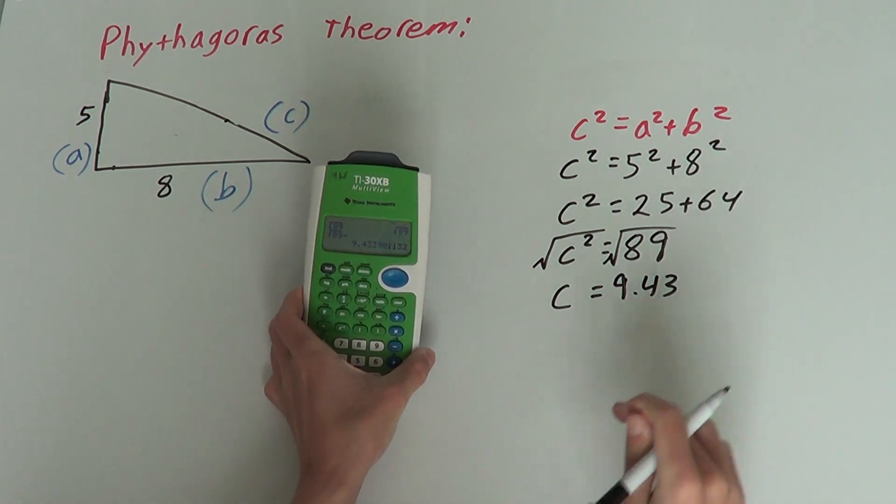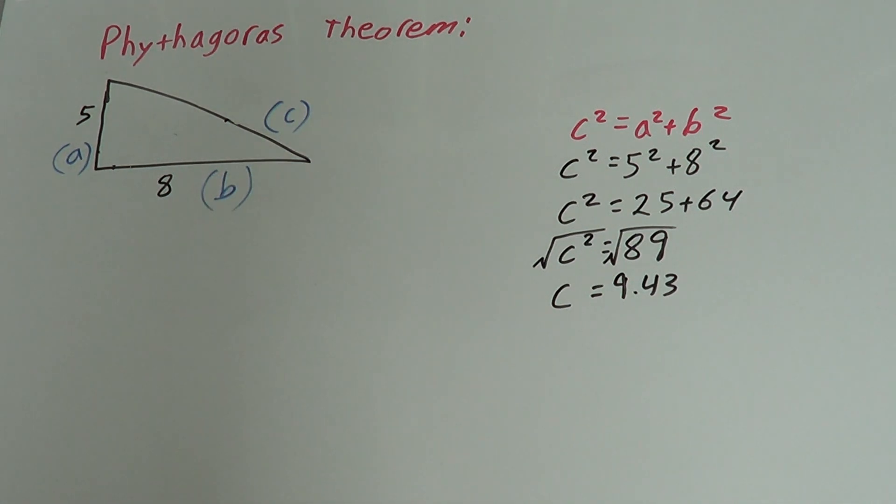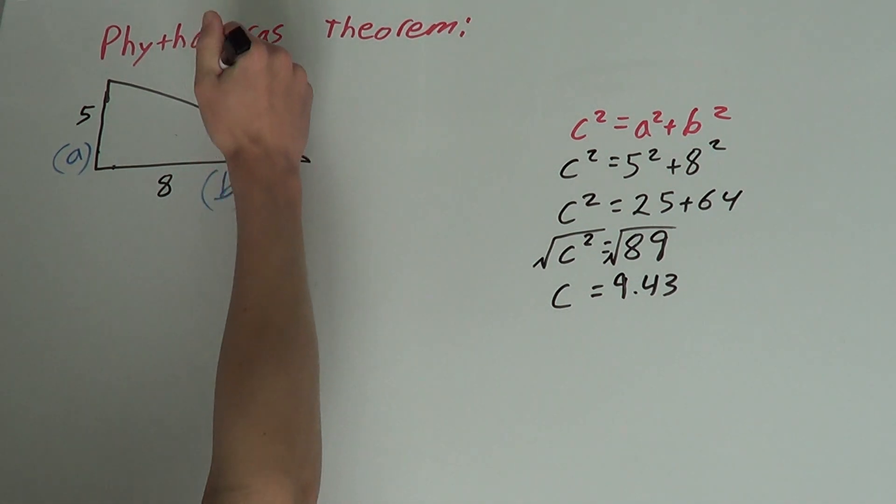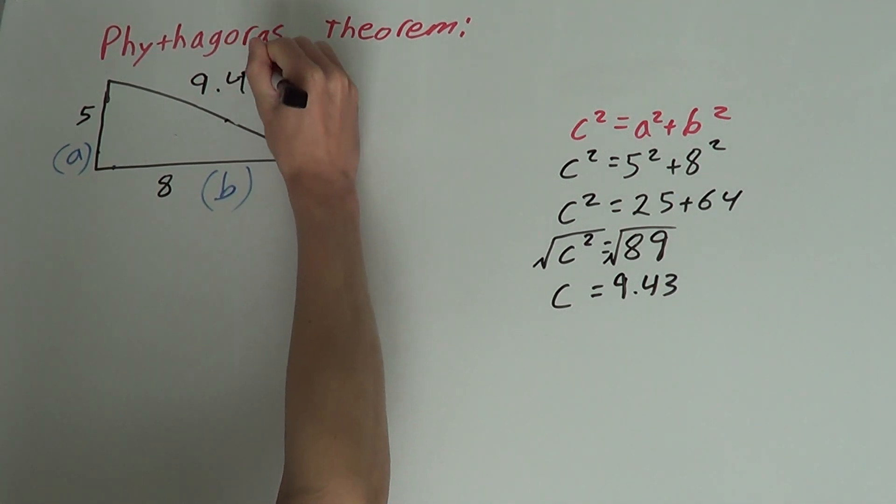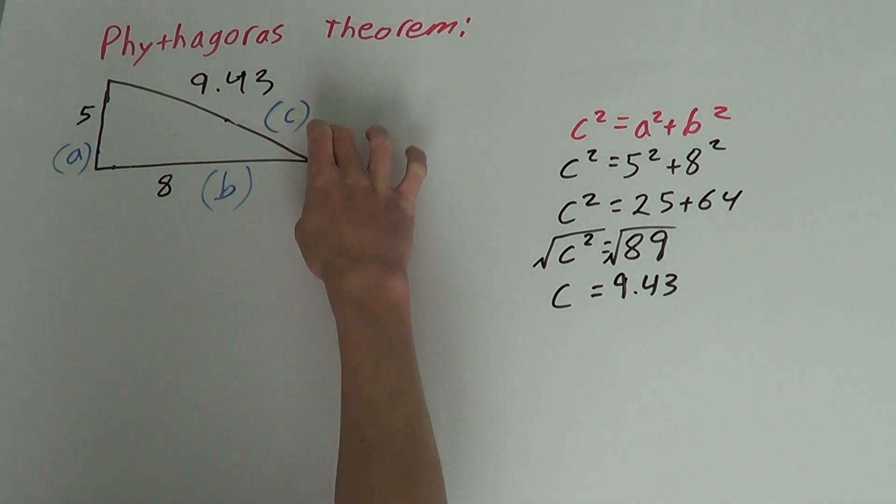It goes on for a long time. Generally, you want to round it to two decimal places unless the answer says otherwise. So, c is equal to nine point four three. The hypotenuse is nine point four three. And that is Pythagoras theorem.